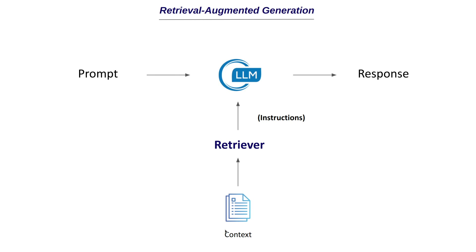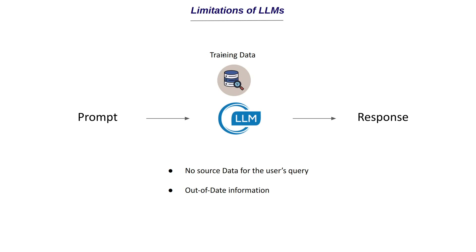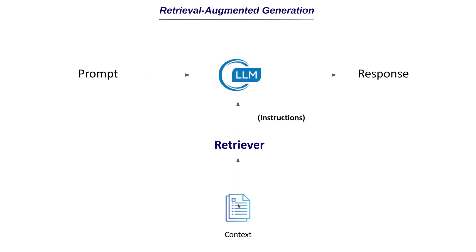What we do is take this context — or document — and use a retriever to pass this information to the LLM. We also add custom instructions, telling the LLM to answer the question from this document and not make up an answer. Based on these instructions, the LLM gives a response. This is the application of retrieval augmented generation — it enables the LLM to answer questions not based solely on the corpus it was trained on, but from the context we provide.